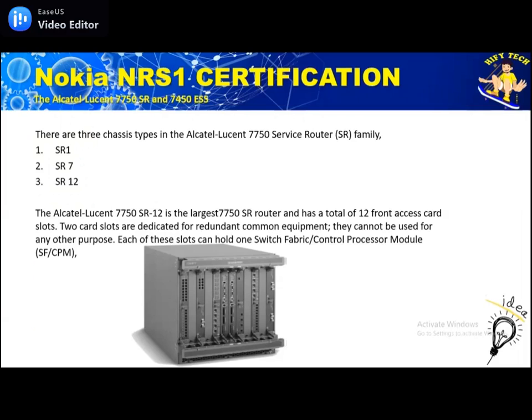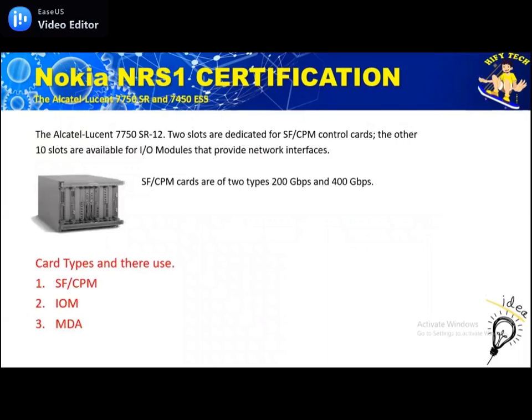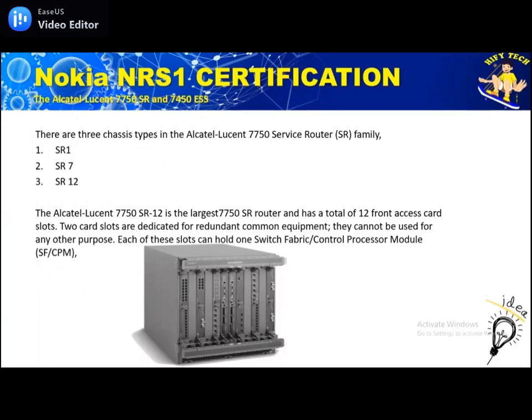The SR-12 has different card types. The first card is SF/CPM — SF means Switch Fabric and CPM is Control Process Module. Then we have IOM, which is Input Output Module, and MDA. The CPM is the controlling card, so we always keep a redundant protective card. In case one fails, it will switch to the second one, so there are always two cards for the control unit.